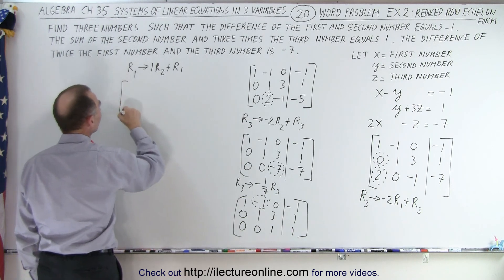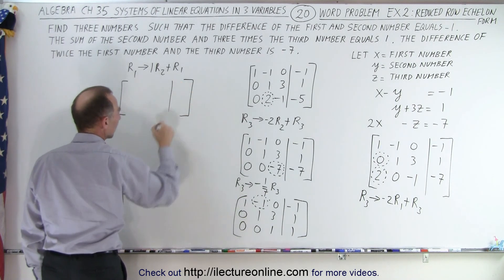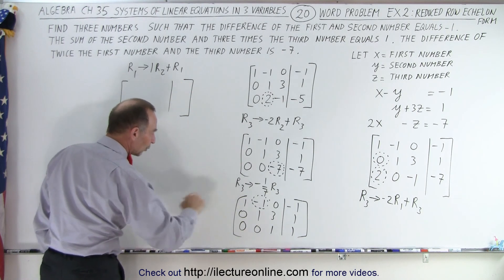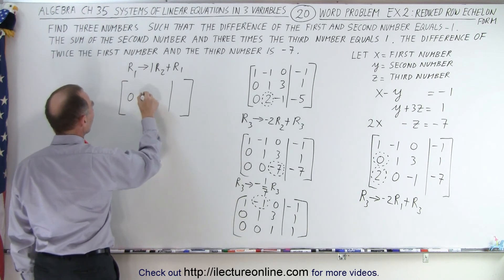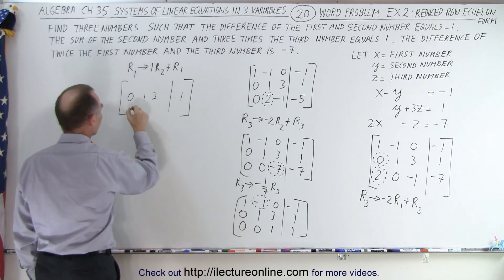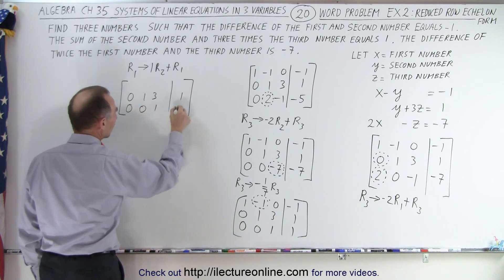So that means we're going to rewrite the matrix. And the second and third row don't change. So this is zero, one, three, and one. Zero, zero, one, and one.